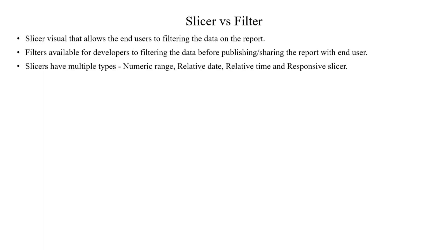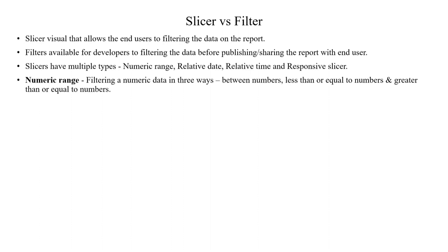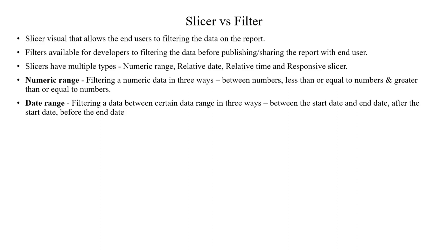Slicers have multiple types in Power BI: Numeric Range, Relative Date, Relative Time, and Responsive Slicer. When it comes to Numeric Range, we can slice between 1 to 10 — that's called a Range Slicer. And we can choose greater than 10 or less than 10, like greater than 18 years old data or less than 18 years old data. We can filter based on conditions in Numeric Range.